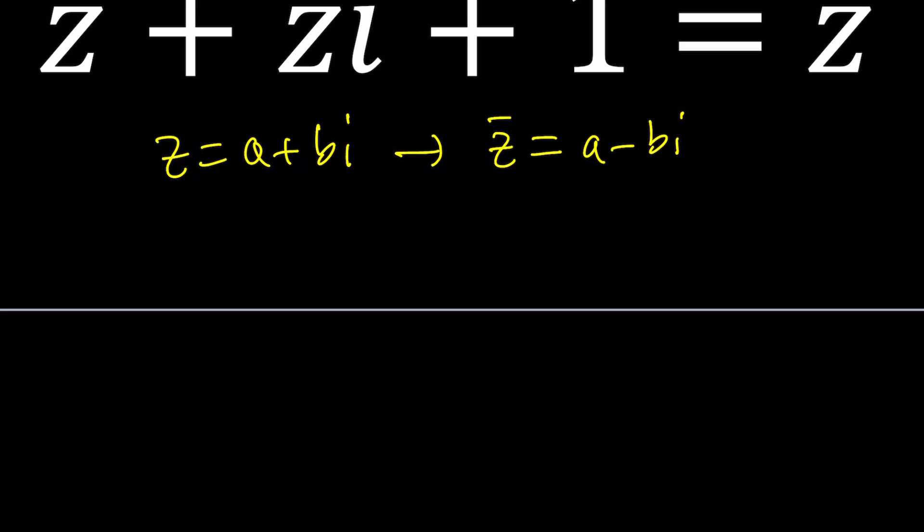If you add them, bi cancels out and you get 2a. Again, that's a real number, because a and b are real numbers by definition. Great.